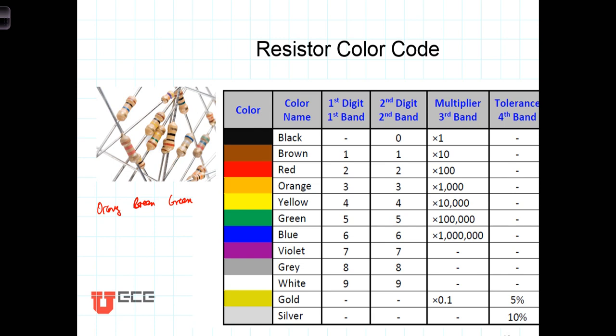These three stripes have a scientific notation flavor. The first two stripes represent the significant digits—in this case orange is three and green is five. The third stripe tells us the number of zeros to add after the significant digits. So orange, green, green gives us three, five, and then five zeros: 3,500,000 ohms, or a three and a half million ohm resistor.